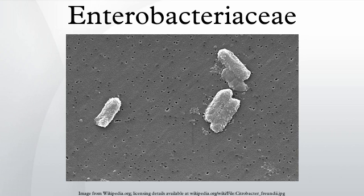Characteristics: members of the Enterobacteriaceae are rod-shaped, and are typically 1 to 5 micrometers in length. They appear as small gray colonies on blood agar. Like other Proteobacteria, Enterobacteria have gram-negative stains, and they are facultative anaerobes, fermenting sugars to produce lactic acid and various other end products.